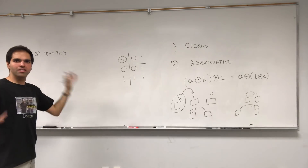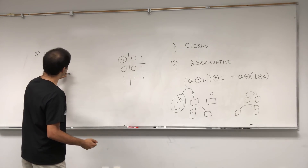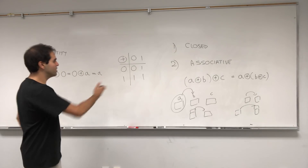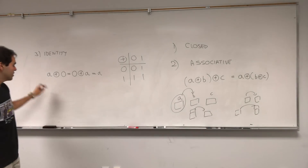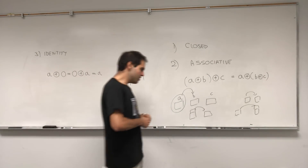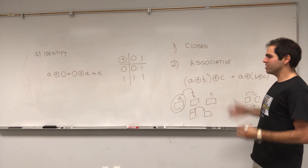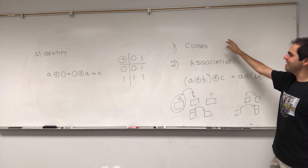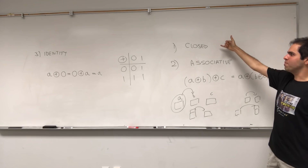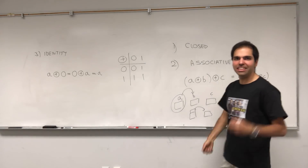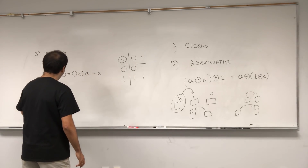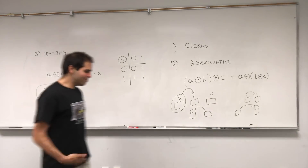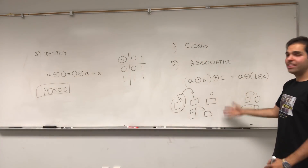Then you have the identity element — namely, there's an element called zero lasagnas, such that if you add zero lasagnas to A, you get A. The zero element is actually the number zero here, because adding zero lasagnas to a stack of A gives you A lasagnas. So you have a set with an operation that's closed, associative, and has an identity — and that's what's called a monoid. Lasagna addition forms a monoid.